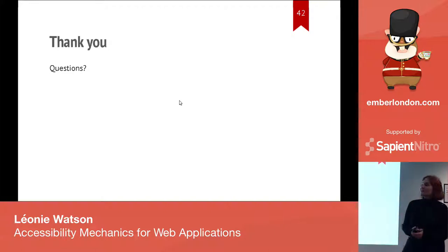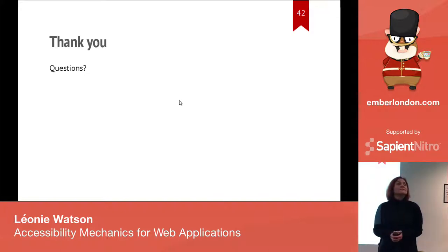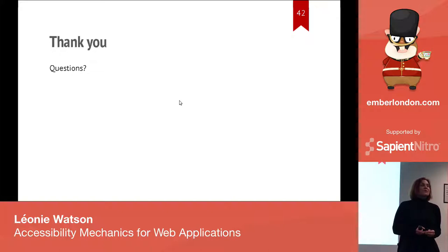That's me done — thank you very much. [Q&A] Question: You focused on screen readers — are there any other accessibility aids we should think about? The three key ones are screen readers, screen magnifiers, and speech recognition tools — voice input — in terms of assistive technologies. There are other variations, but those three, plus keyboard accessibility irrespective of any assistive technology, will cover most of the groundwork for you.